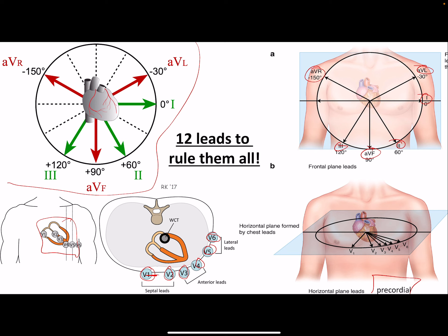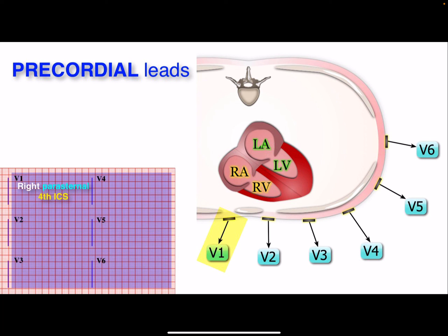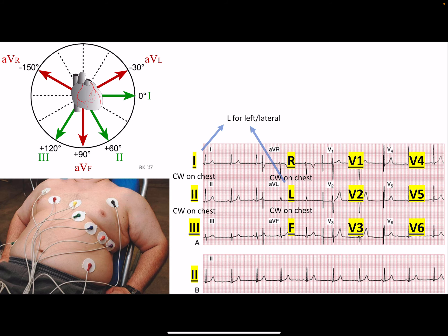The precordial leads are near the sternum, a little inferior, and move laterally along the chest. Going from I to II to III is really just making a clockwise twist, continuing clockwise, then R, L, F — also moving clockwise. V1 through V6 are in increasing numerical order, going from the medial sternum more laterally.